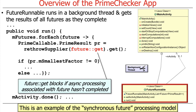This thread is running in a background thread, so it can afford to block — it's not blocking the UI thread. It blocks waiting for the next computation to complete. If a computation is already done it grabs it; if not, it waits until that particular computation is done. This is an example of a synchronous future processing model — waiting synchronously in the order in which calls were submitted to get their results. There are pros and cons with this approach, mostly cons, but we'll proceed with it for now.